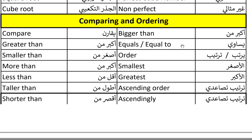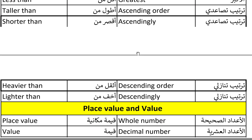Note: when expressing that something equals something, you can say 'equals' or 'equal to,' but you cannot say 'equal' alone or 'equals to' — it's either 'equals' only or 'equal to' only. That is the correct usage in English. The next word: order. Smallest. Smallest. Greatest. Greatest. Ascending order. Ascending order. Ascendingly. Ascendingly.